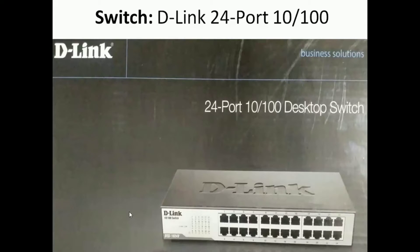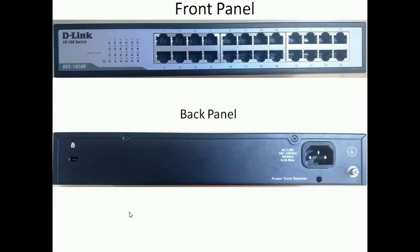The D-Link switch supports 10/100 Mbps network speed. We can connect up to 24 PCs to form a LAN, and we can extend this LAN by connecting multiple switches in series. The front panel shows 24 ports with a corresponding numbered LED panel. When a LAN cable is connected to a port, the corresponding LED will start glowing. The back panel has a provision to connect the power cord. If power fails, the whole network will collapse because we are forming a star topology using this switch.